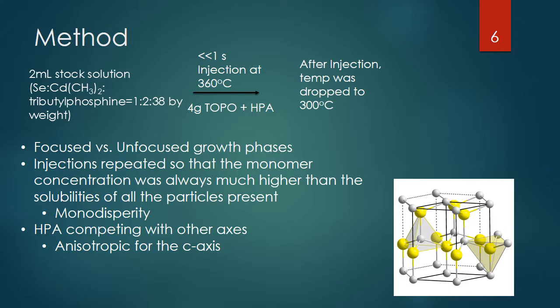They found that if they used technical grade TOPO — about 90% purity — the growth was a little bit easier to control. When using pure TOPO, all the axes were growing a little bit uncontrollably and too much at a time, so they were unable to get narrow rods small enough to still exhibit the quantum confinement effects needed for the different colors and properties at the very small scale.